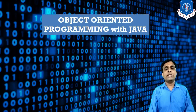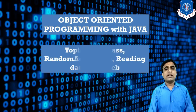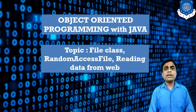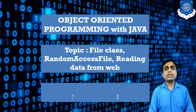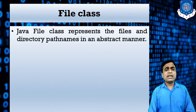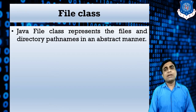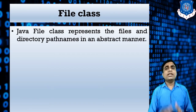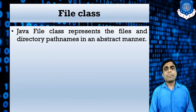Hello everyone, welcome back to the video series of Object Oriented Programming with Java. Today's topic is the File class, Random Access File, and reading data from the web. I am instructor Ankit Patel. The File class represents the file and directory pathname in an abstract manner. If you want to get all the properties of a file, you can easily do so using the File class.